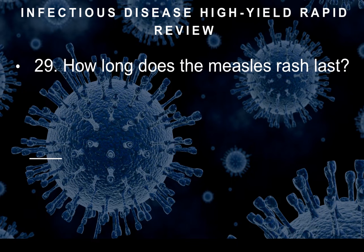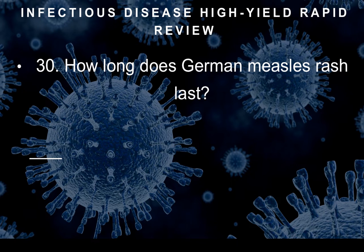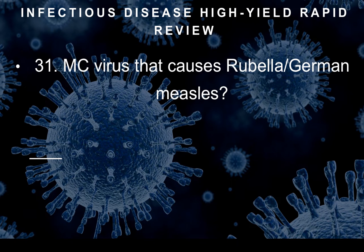Question twenty-eight: How long does the measles rash last? Answer: seven days. Question twenty-nine: How long does the German measles rash last? Three days. So regular measles = seven days, German measles = three days. Question thirty: Most common virus causing rubella (German measles) — that would be togavirus. Togavirus = German measles.